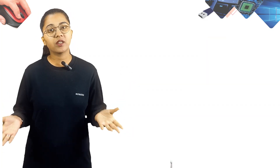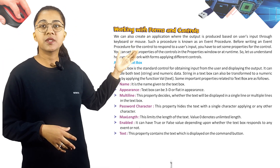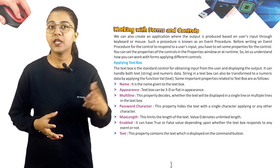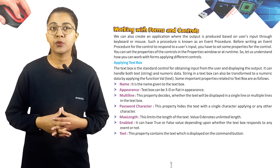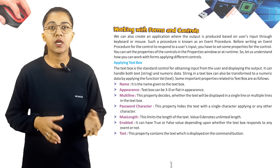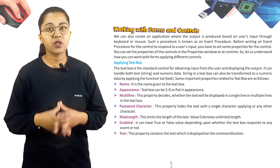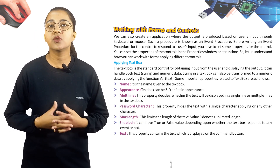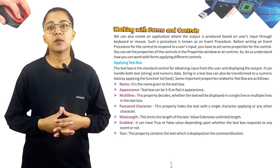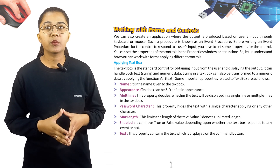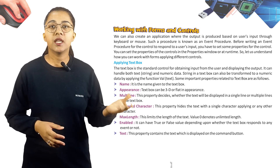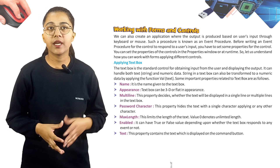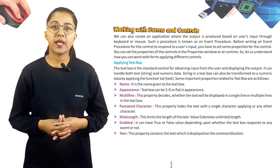Now let's start our next topic: Working with Forms and Controls. We can create an application where the output is produced based on the user's input through keyboard or mouse — this is known as an event procedure. Before writing an event procedure, you have to set some properties for the control, either in the properties window or at runtime.